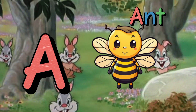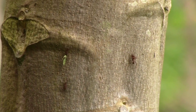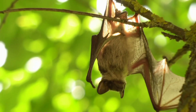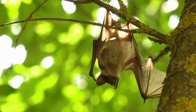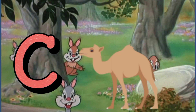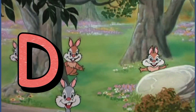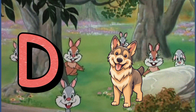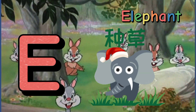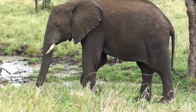A is for ant, a-a-ant. A is for ant, a-a-ant. B is for bat, b-b-bat. C is for camel, c-c-camel. C is for camel, c-c-camel. D is for dog, d-d-dog. D is for dog, d-d-dog. E is for elephant, e-e-elephant. E is for elephant, e-e-elephant.